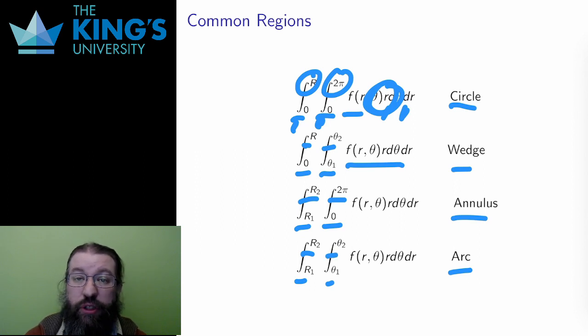As I said in the first video, in multivariable calculus, the main reason for changing variables is not to fit the function, but to fit the region of integration. If the region of integration is a circle, a wedge, an annulus, or an arc, I now have very nice setups for these integrals, and this helps a great deal. I'll do some examples of this in the next video.